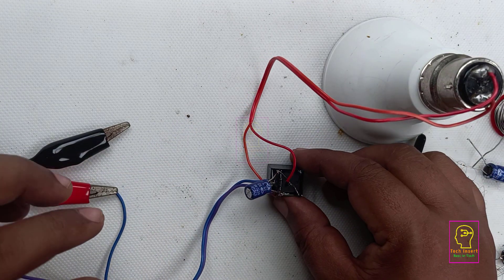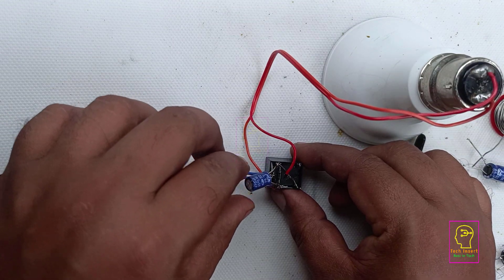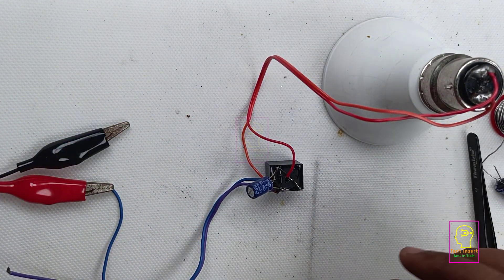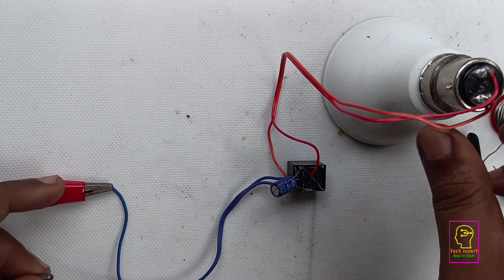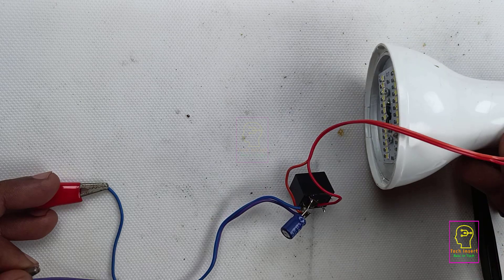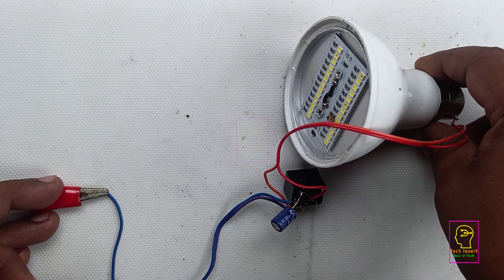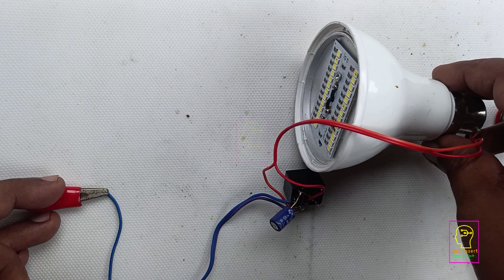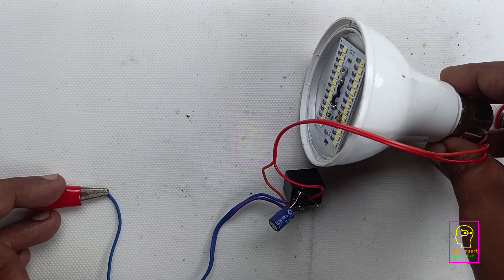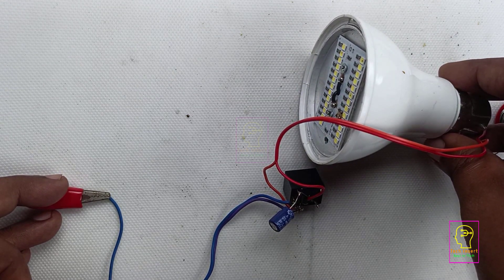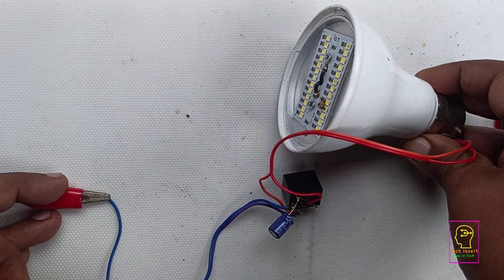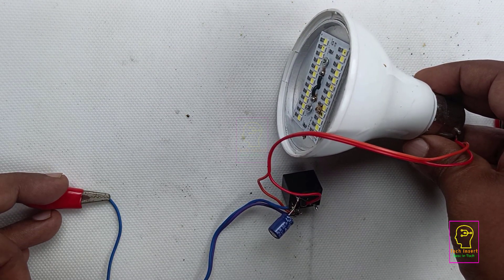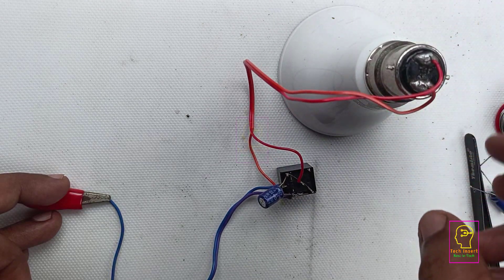Now I have connected the 470 microfarad capacitor across the coil. Again I am powering the circuit, let's see how this works. Here when we connect the power supply, the capacitor gets charged, and when it de-energizes, the capacitor will discharge its charge to the coil to keep it energized for some time.